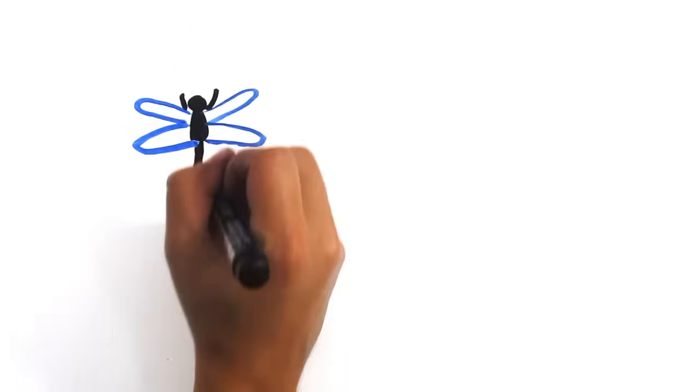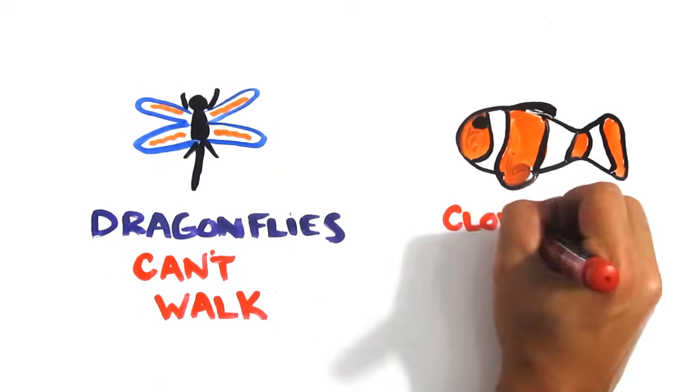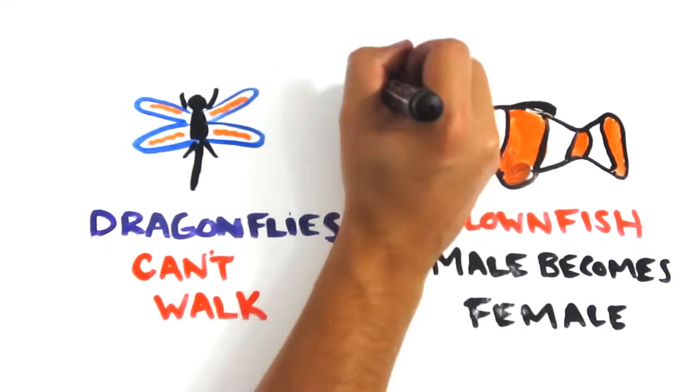And did you know that while dragonflies have legs, they can't walk, only land? Or that in a population of clownfish, if the female dies or is removed, the most dominant male will become a female?